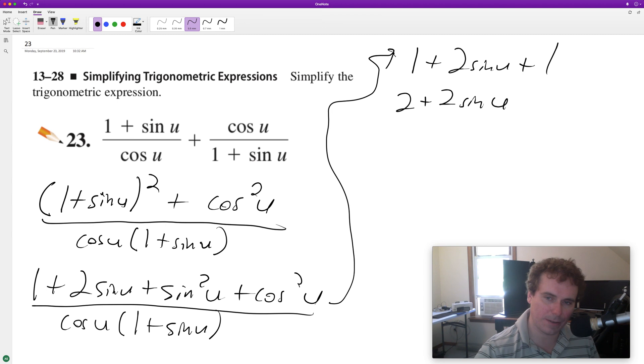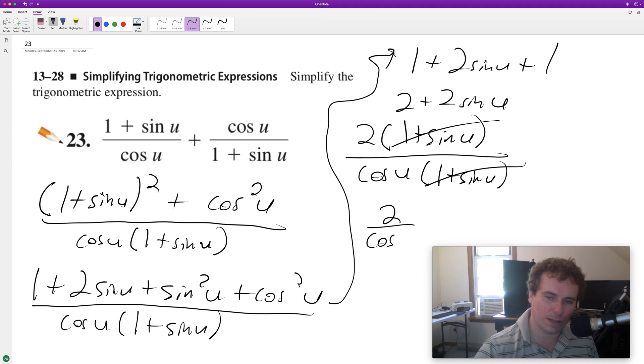I haven't written the denominator yet. Factor out a 2, we get 1 plus sine u, and then in our denominator we've got cosine u times 1 plus sine of u. Cancel this out and we're left with 2 over cosine u, and that's it